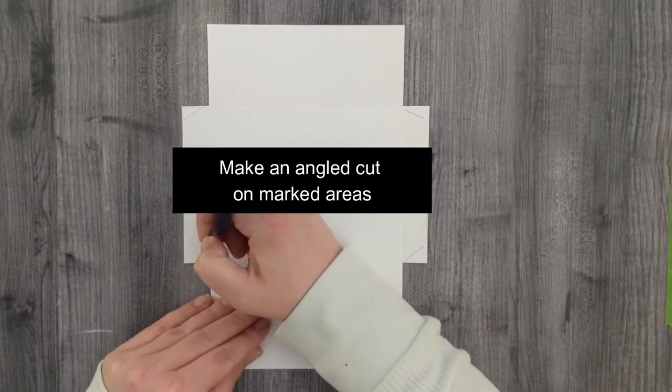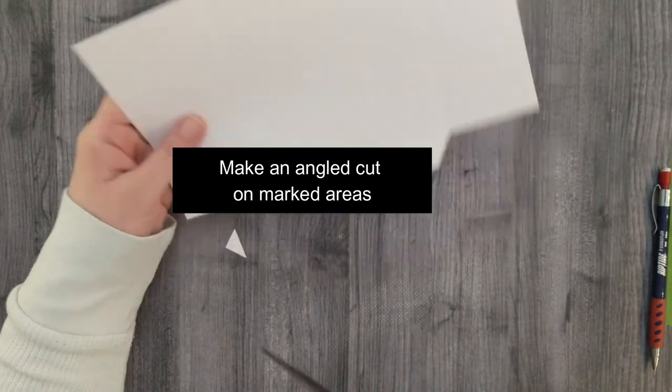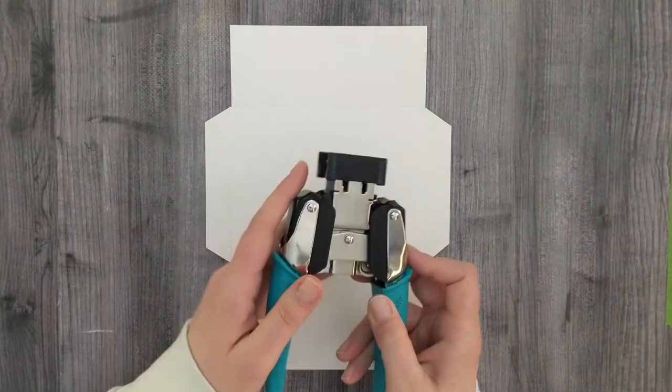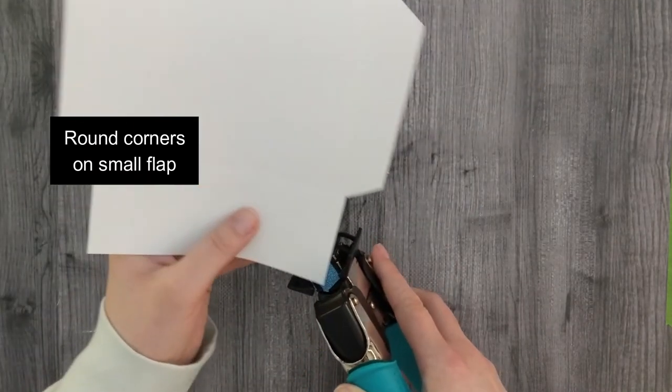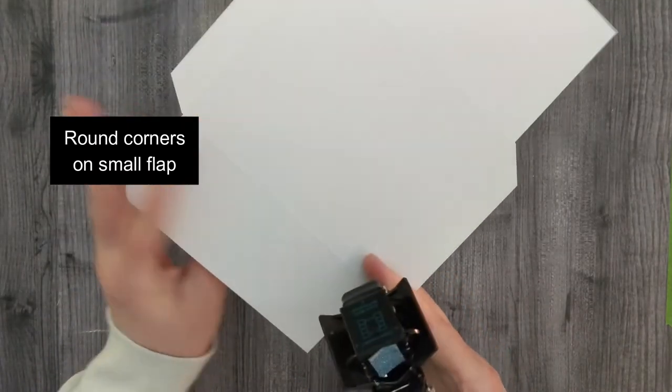Make pencil marks on the edges and make an angled cut on the marked areas. Using a 1/2 inch corner rounder, round the corners on the closing flap of the envelope.